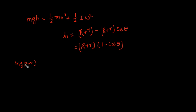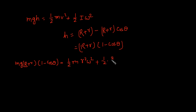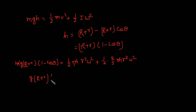Substituting into the energy equation: mg(R + r)(1 − cosθ) = (1/2)mv² + (1/2)Iω². The moment of inertia of the ball is I = (2/5)mr². Cancelling mass m from both sides, we get: g(R + r)(1 − cosθ) = (1/2)r²ω² + (1/5)r²ω².